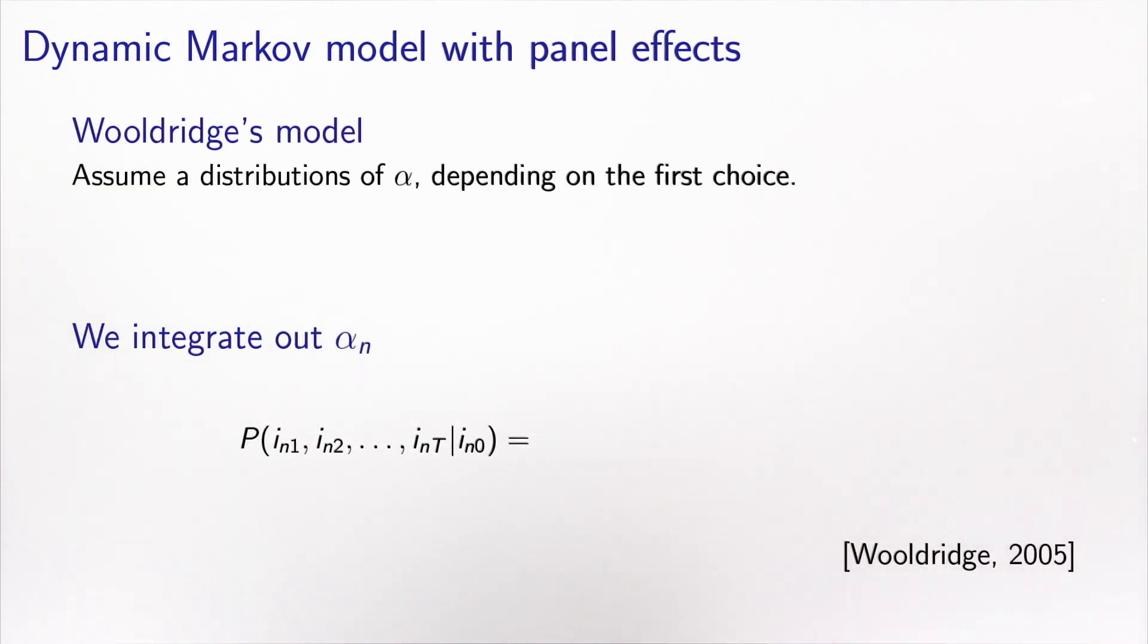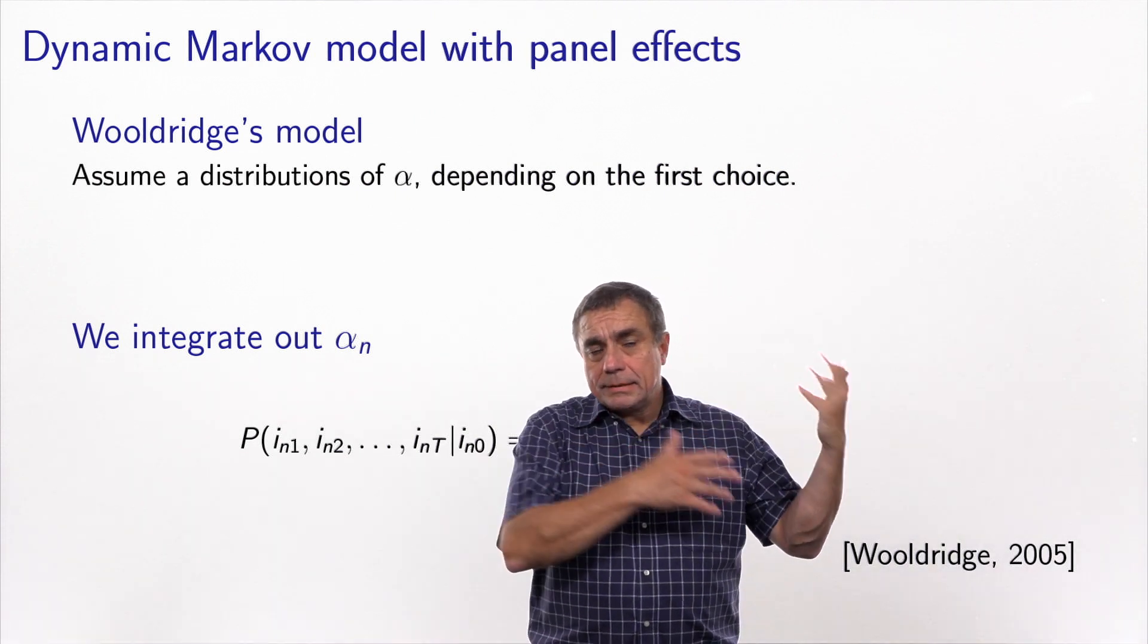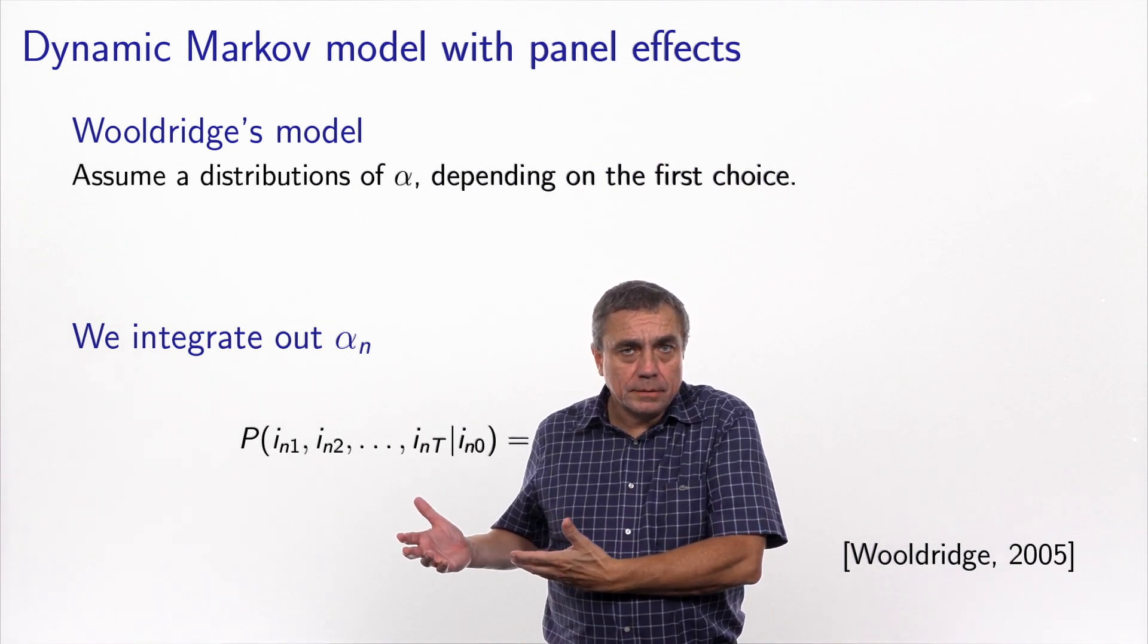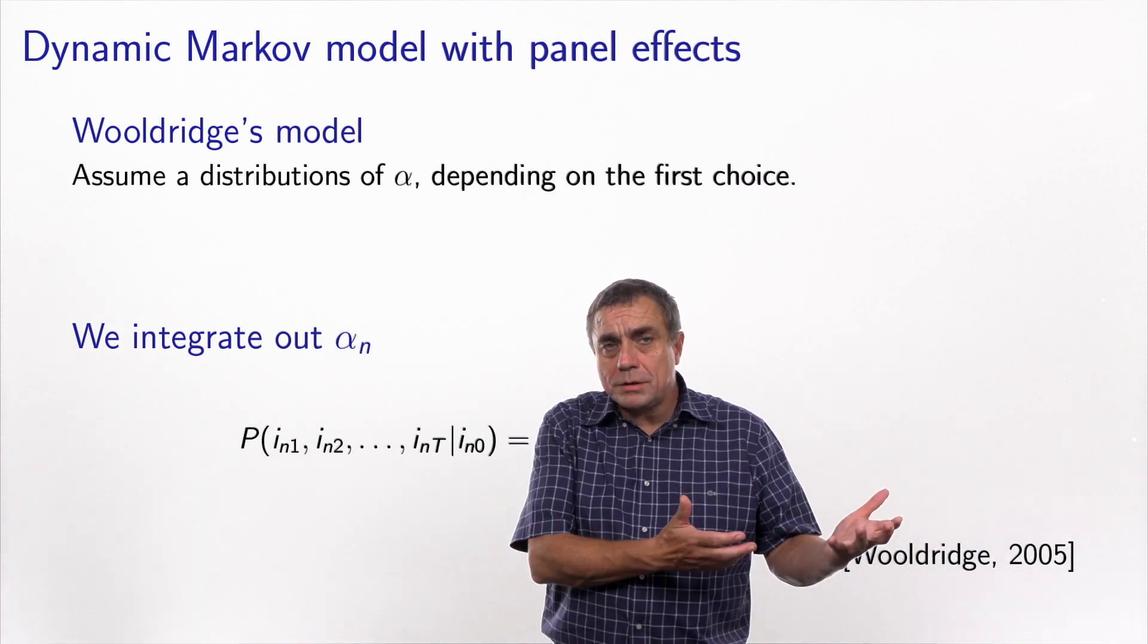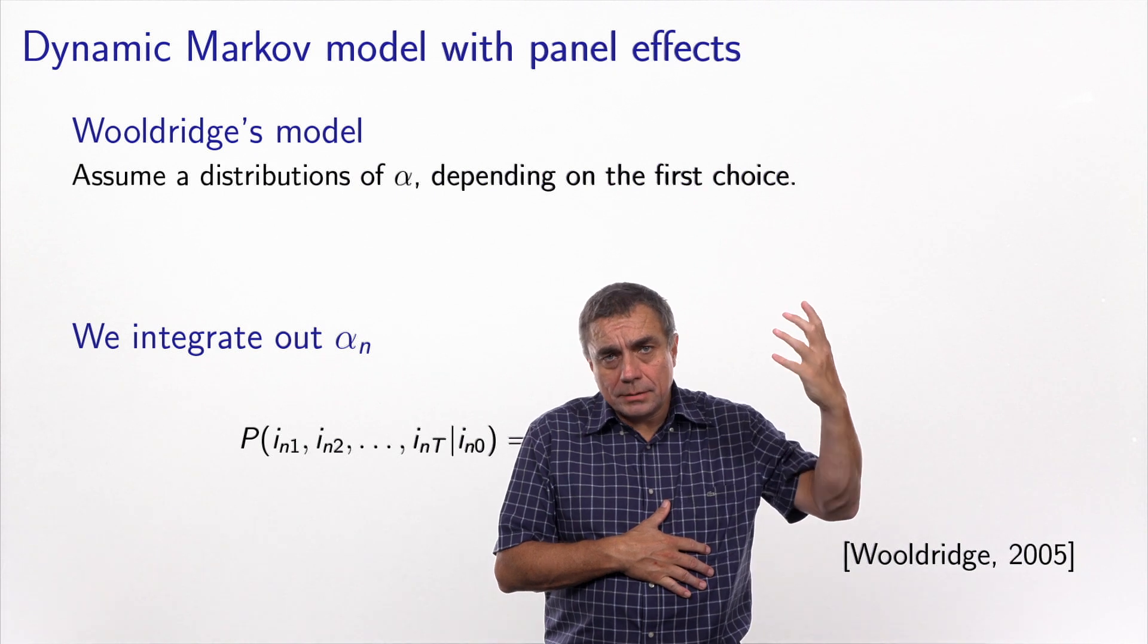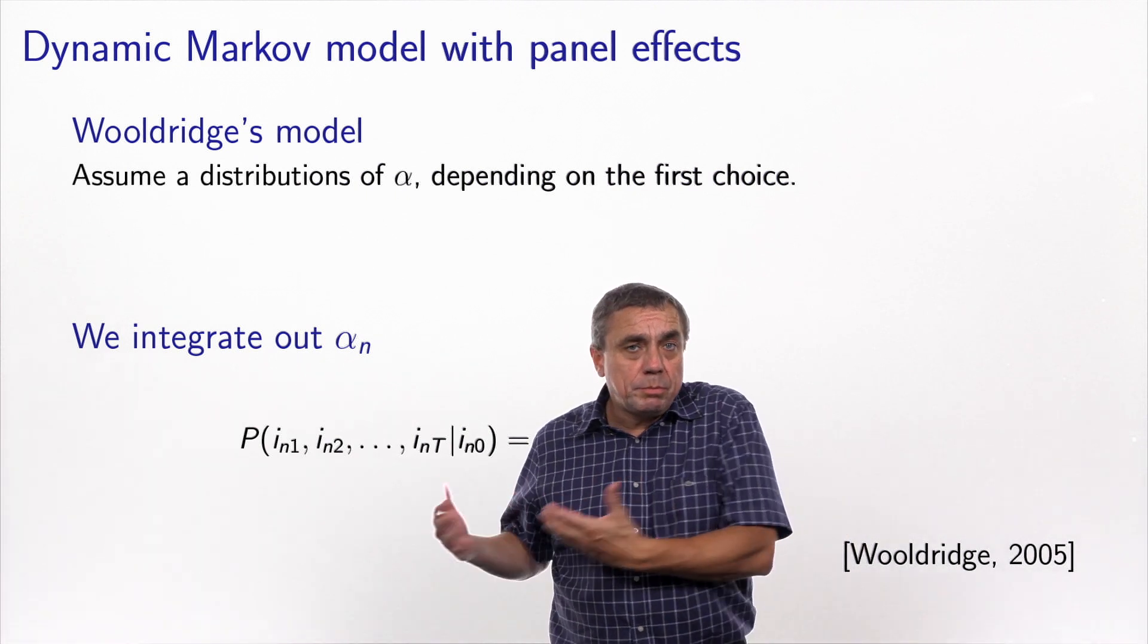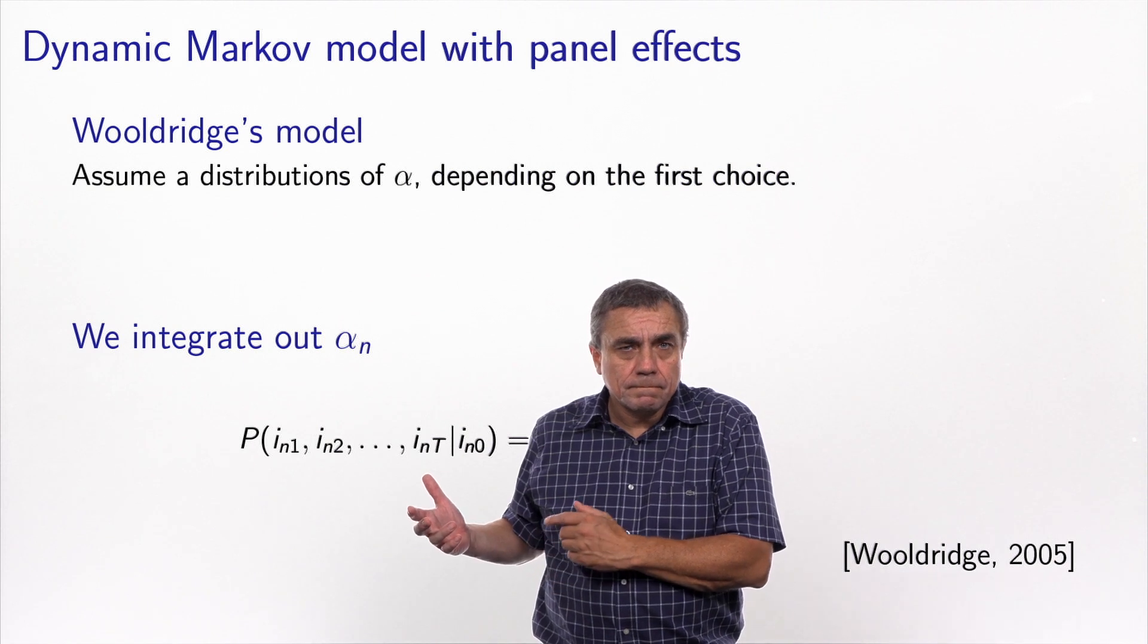Now the way to address this issue of endogeneity, in this context, has been proposed by Wooldridge. And the idea is the following. If you take this example of heavy smokers who are addicted to cigarettes, and people who are not addicted to cigarettes, well these people will have a different distribution of alpha. The first class will have a very strong alpha for cigarettes, irrespectively of the cost, irrespectively of the impact on the health, and so on. While people from the second class will not have this strong alpha for cigarettes.